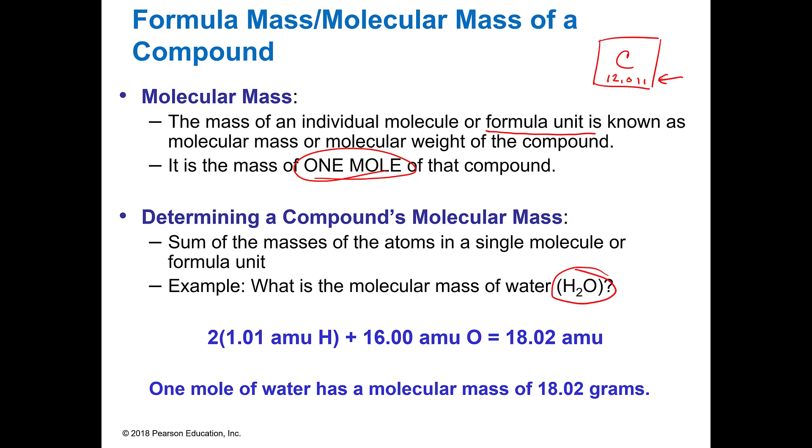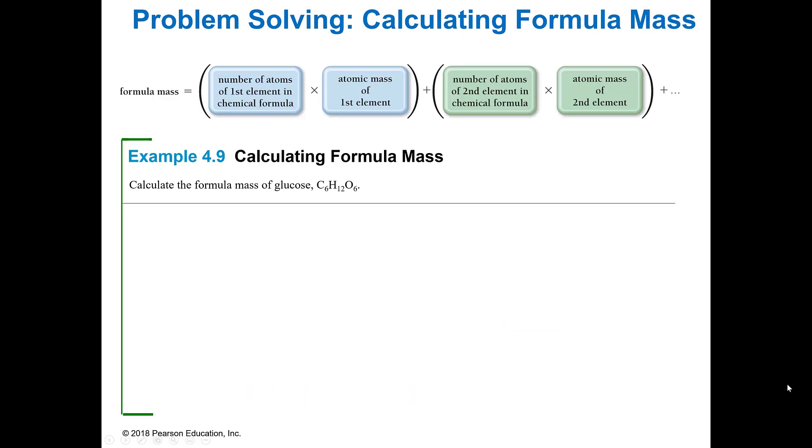So, for example, when you have water, you have two hydrogens. And so they are 1.01 AMUs, and I got that from the periodic table. Plus 16, which is the atomic mass of oxygen, and that gives me 18.02 AMUs. One mole of water has a molecular mass of the same magnitude, but it's now in grams. So it's 18.02 grams. I can use that same number to figure out what the molecular mass of the compound is.